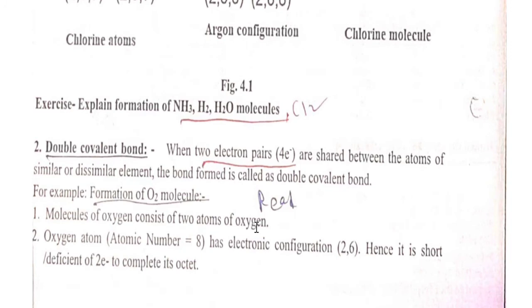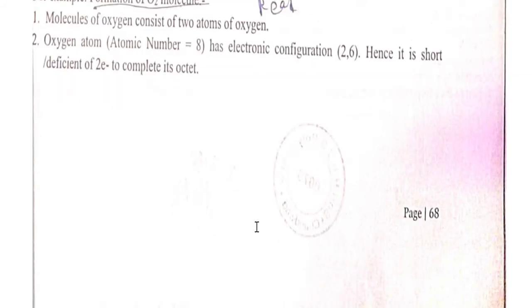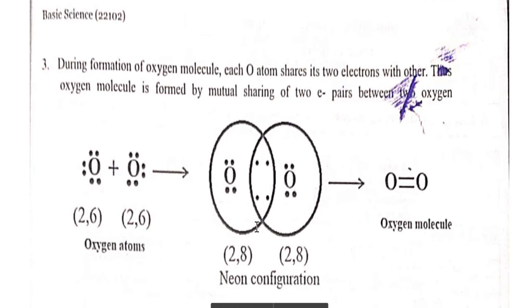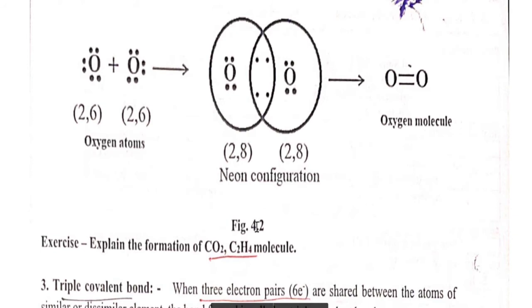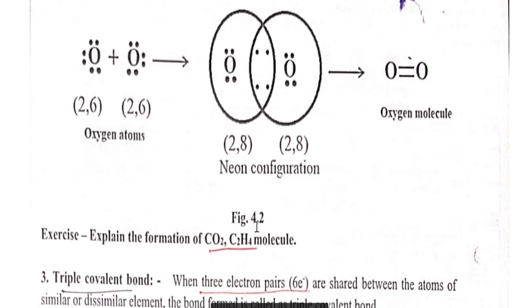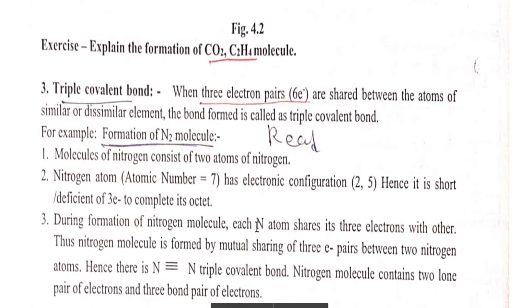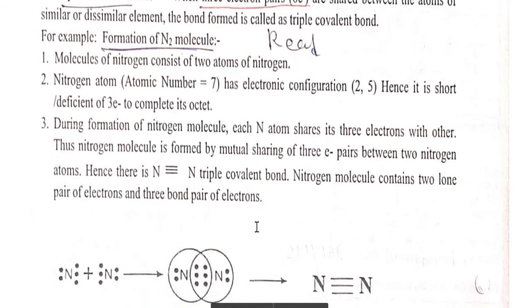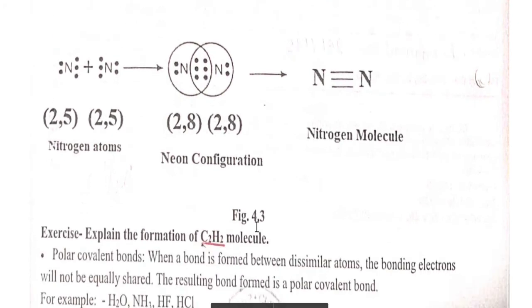Double covalent bond involves sharing of two electron pairs, that means a total of four electrons. Example: formation of oxygen molecule (O2). Other examples of double covalent bond are CO2 and C2H4. Triple covalent bond involves sharing of three electron pairs, that means a total of six electrons. Example: formation of nitrogen molecule (N2). Another example is C2H2.